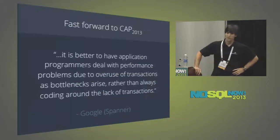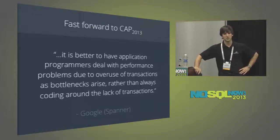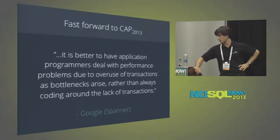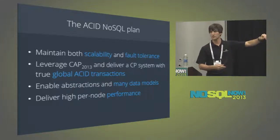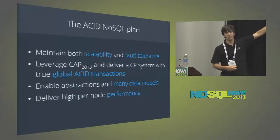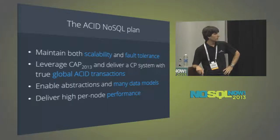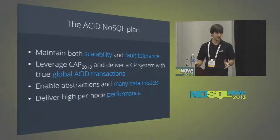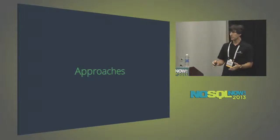There's also the quote: 'It's better to have application programmers deal with performance problems due to the overuse of transactions, rather than have to code around the lack of transactions.' Google invented NoSQL, built Bigtable, and is building a second-gen NoSQL system with transactions in their Spanner product. The plan for bringing ACID and NoSQL together: maintain the scalability and fault tolerance of NoSQL systems, leverage our modern 2013 understanding of CAP, and deliver a consistent system with global ACID transactions — while not sacrificing too much performance.